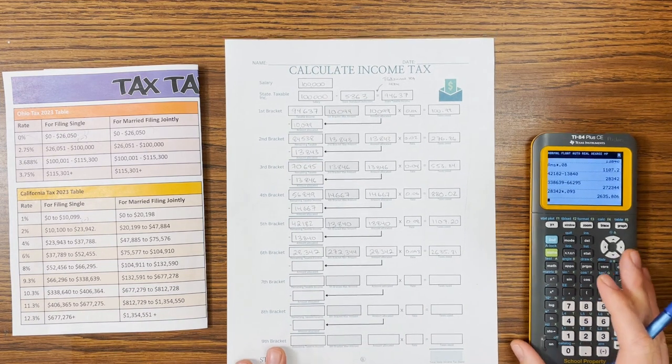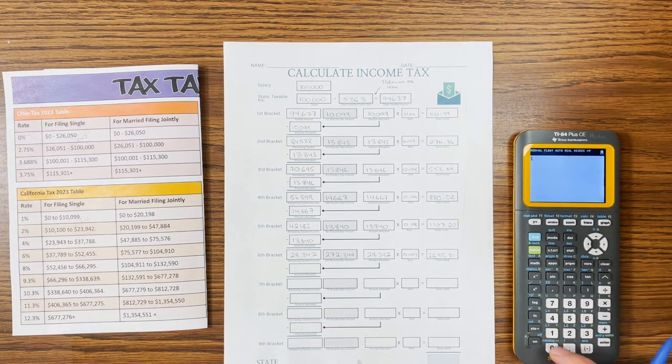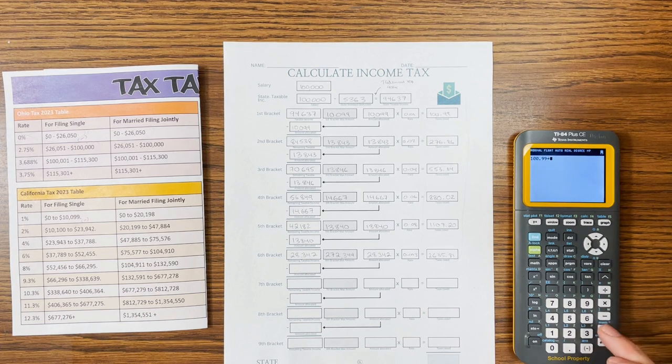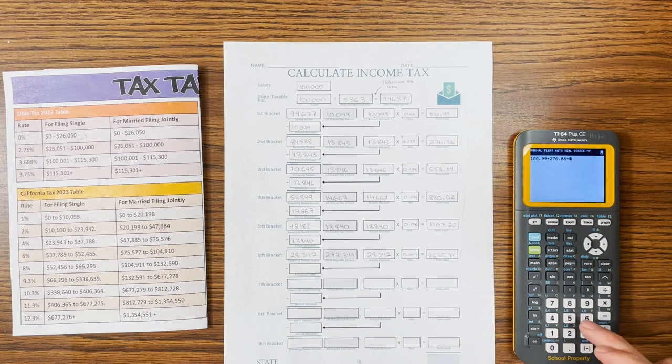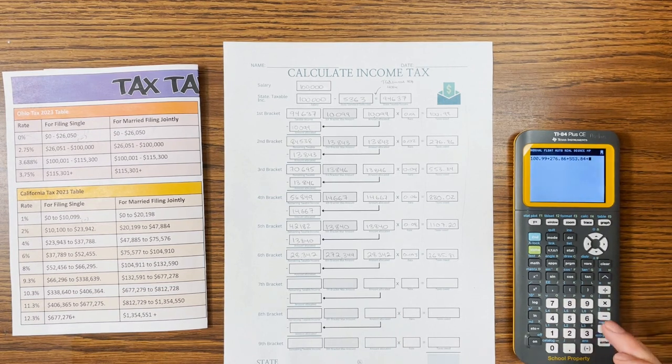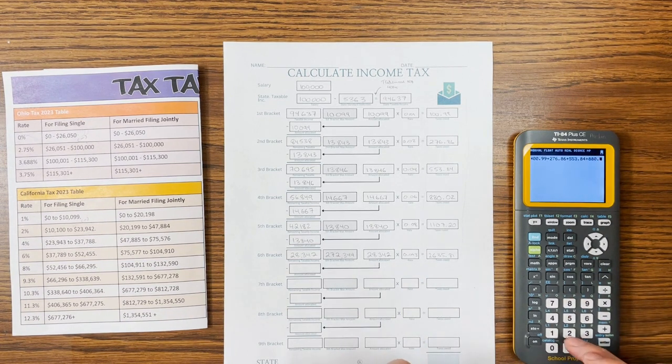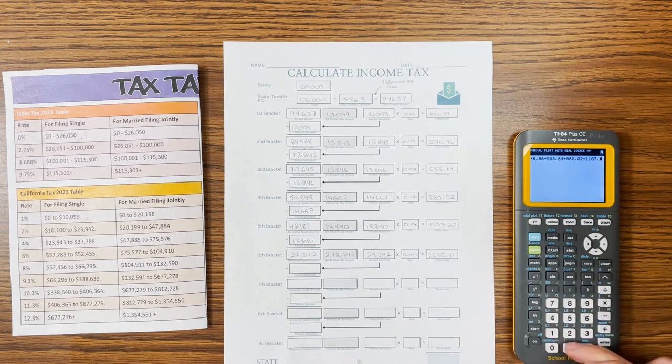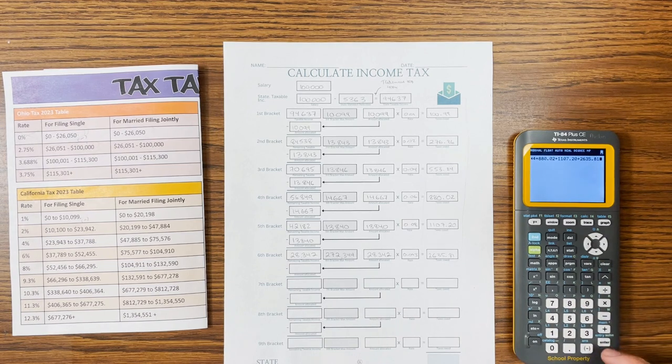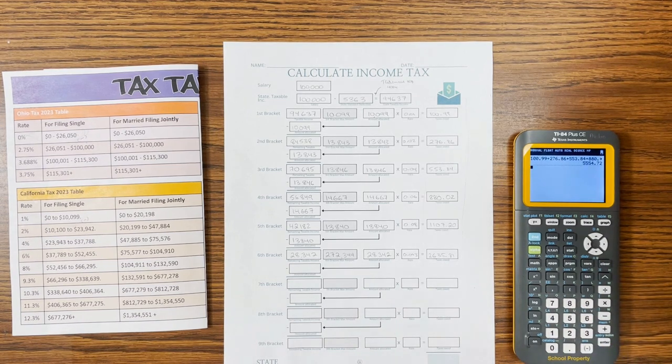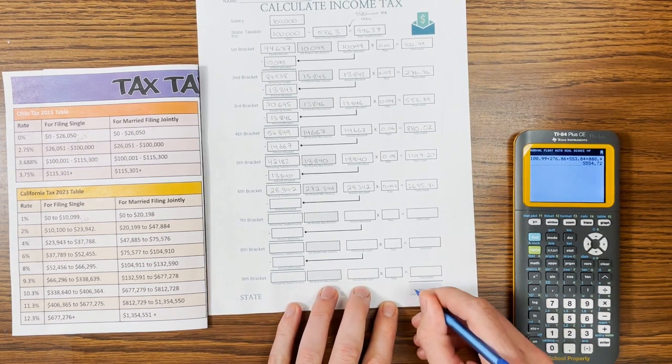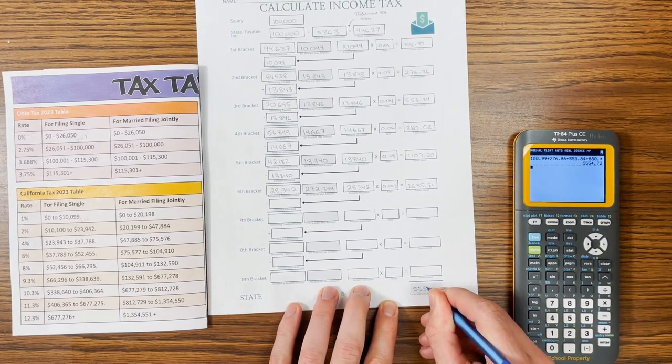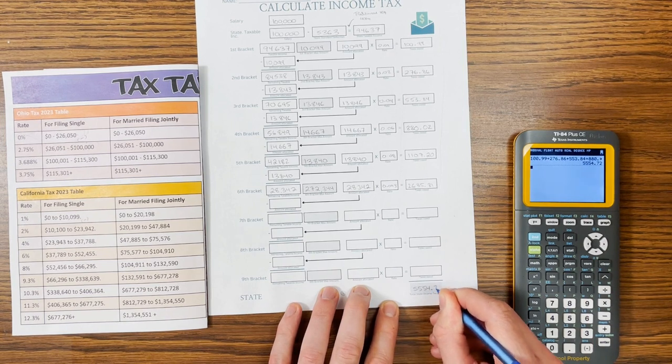Add them together, it's your total state income tax. So we got $100.99 plus $276.86 plus $553.84 plus $880.02 plus $1,107.20 plus $2,635.81. All right, so our total California state income tax owed is $5,554.72.